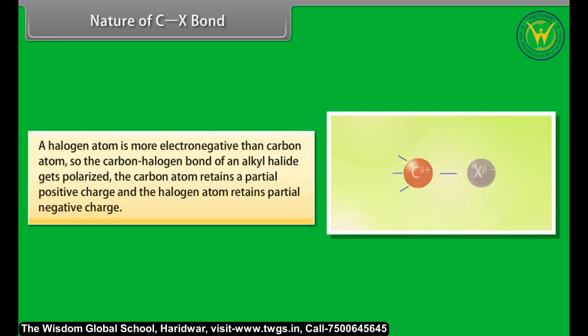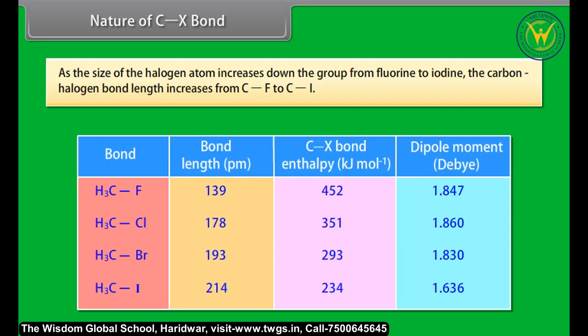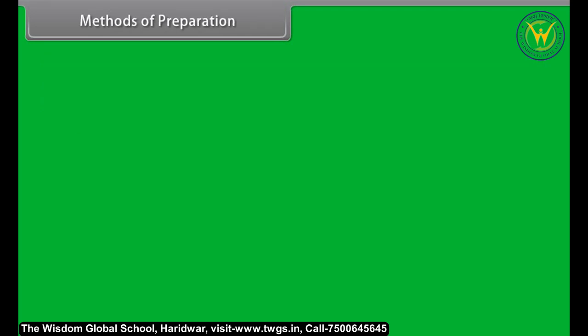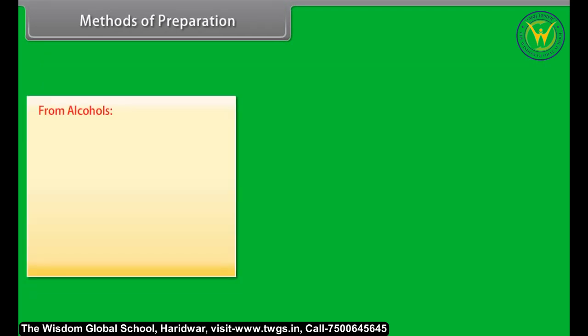A halogen atom is more electronegative than a carbon atom, so the carbon–halogen bond of an alkyl halide gets polarized. The carbon atom retains a partial positive charge and the halogen atom retains a partial negative charge. As the size of the halogen atom increases down the group from fluorine to iodine, the carbon–halogen bond length increases from C–F to C–I.